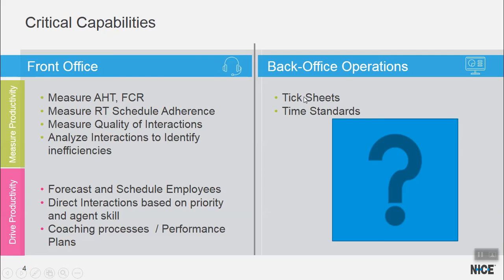Now let's look at how we do this in the back office. When we talk about measuring productivity, we have tick sheets, time standards — nothing matched, just put something small against it. And basically when driving productivity, we have even less — like the whole thing should have one big question mark over it all. Basically showing we don't have anything too much for measuring productivity or driving productivity in the back office.